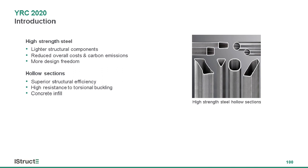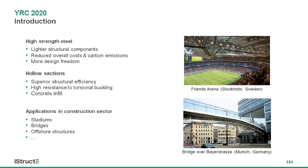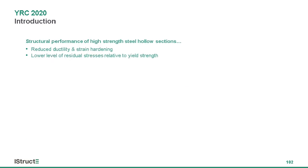High-strength steel enables lighter structural components, reduces overall cost and carbon emissions, and brings more freedom to designers. Hollow sections are well known for their advantages such as better structural efficiency, high torsional resistance, and potential concrete infill. High-strength steel tubular sections combine the benefits from both and have been increasingly used in the construction sector, such as in stadiums, bridges, and offshore structures. The structural performance of high-strength steel tubes can be different because of their reduced ductility and strain hardening, and relatively lower residual stresses compared to yield strength.